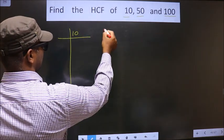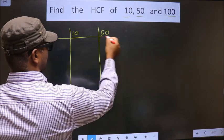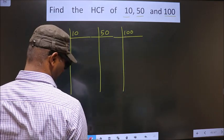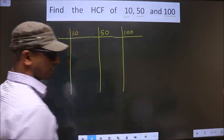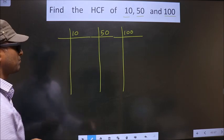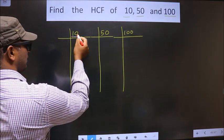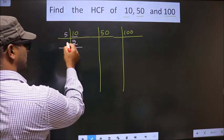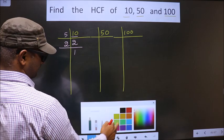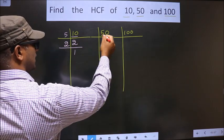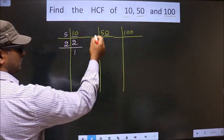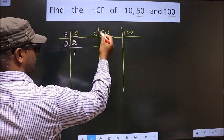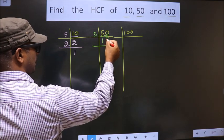10, 50, 100. Now we have 10. 10 is 5 times 2. 2 is a prime number, so we take 2 once. The last digit is 0, so we take 5. The first number is 5. When do we get 5 in the 5 table? 5 once is 5. This 0 is carried down.